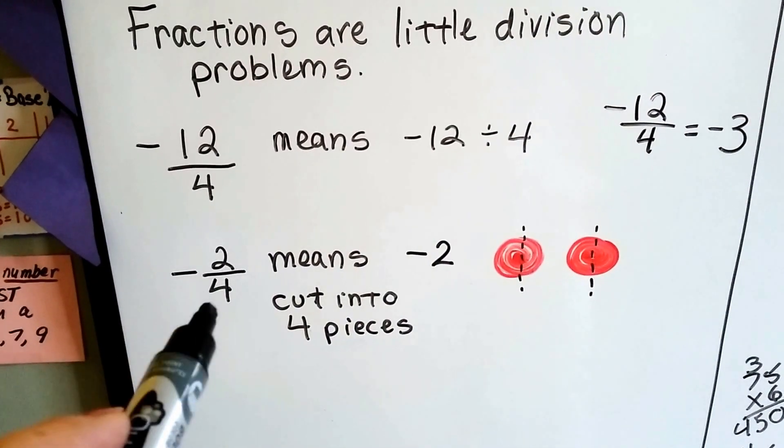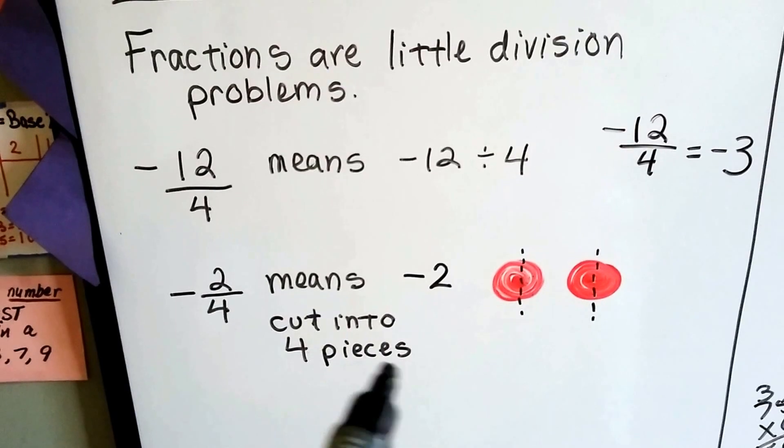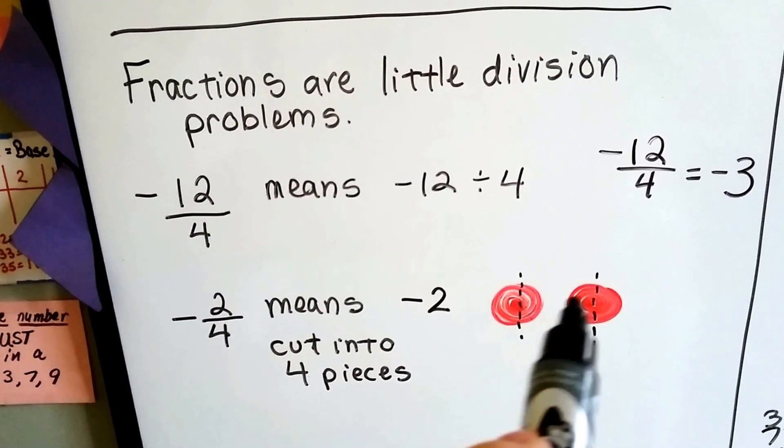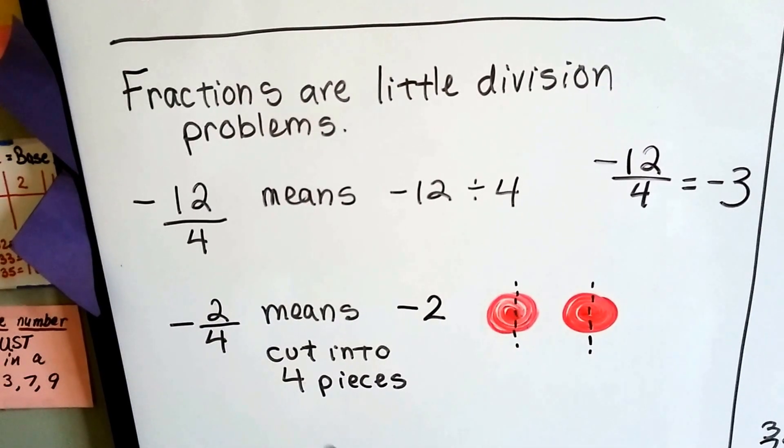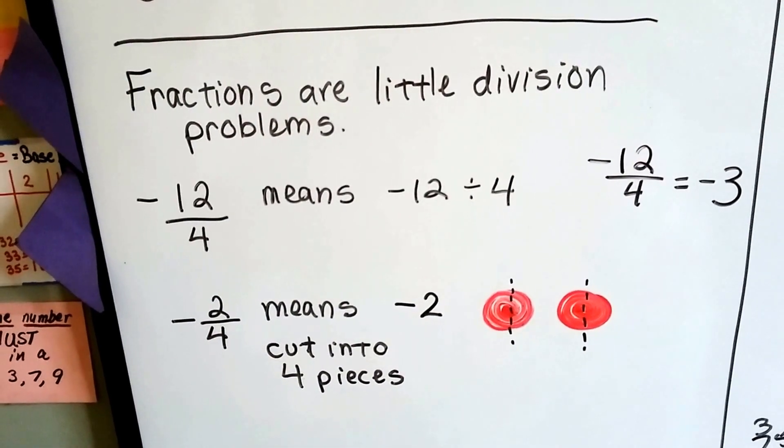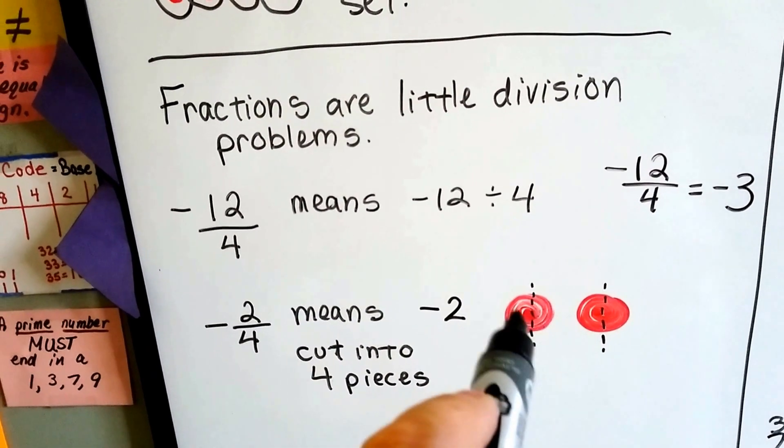And if we had negative 2 fourths, that means a negative 2 is cut into 4 pieces. See? 1, 2, 3, 4. It would be negative half, wouldn't it? It would cut them each in half.